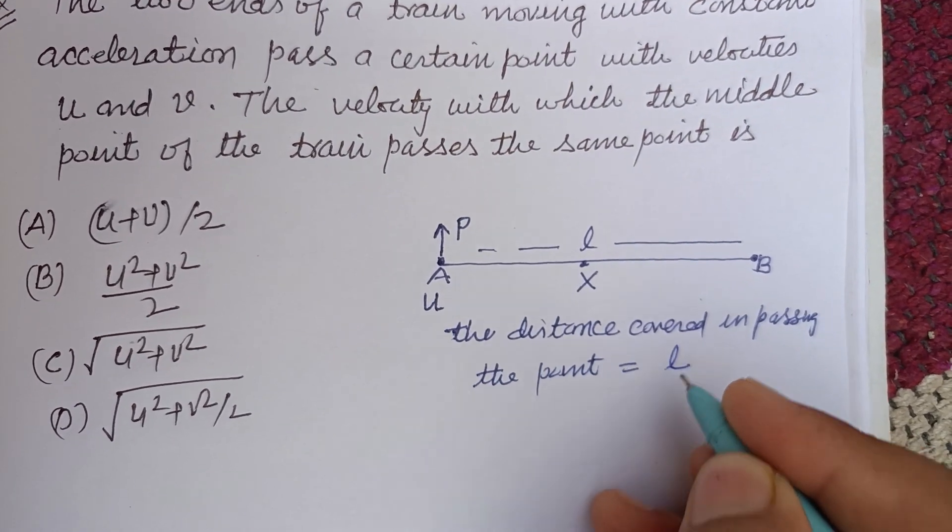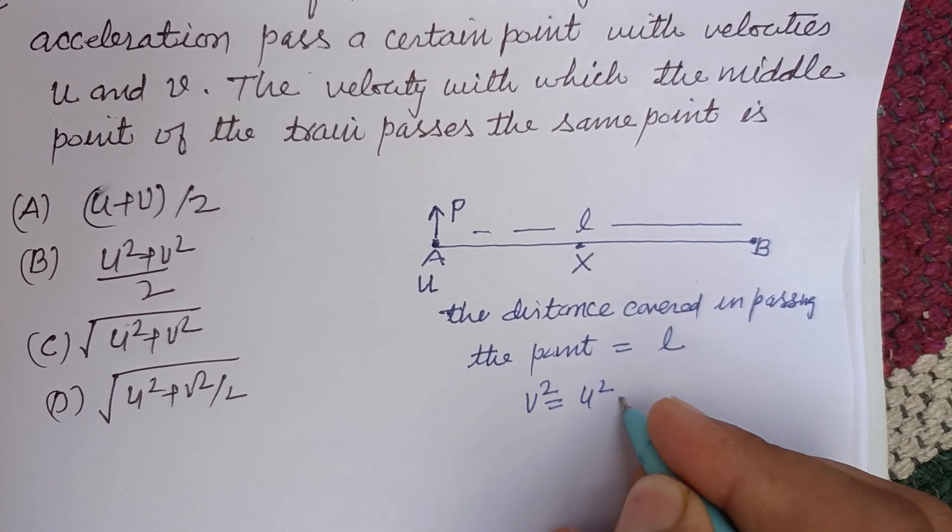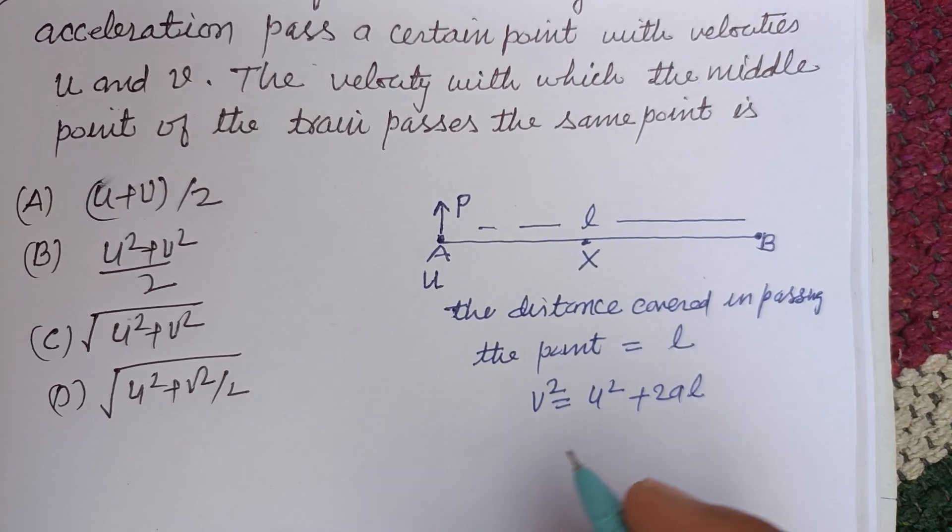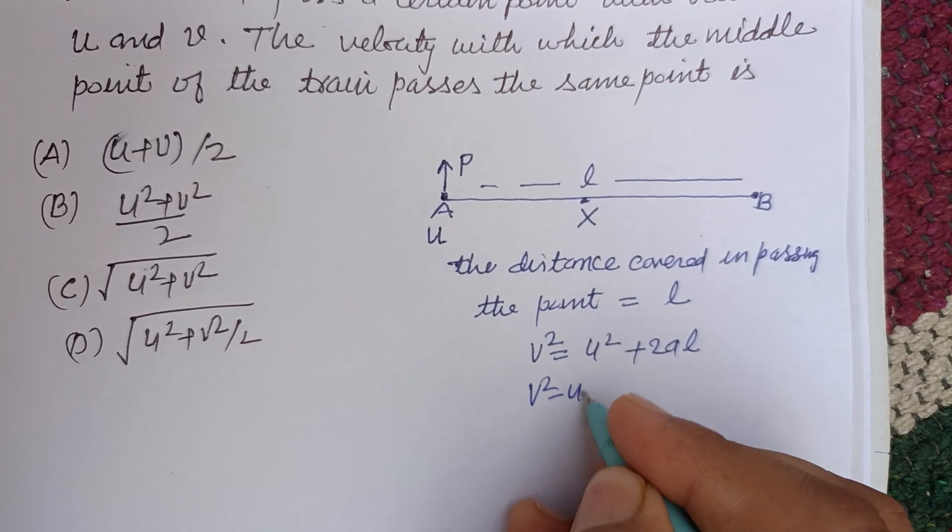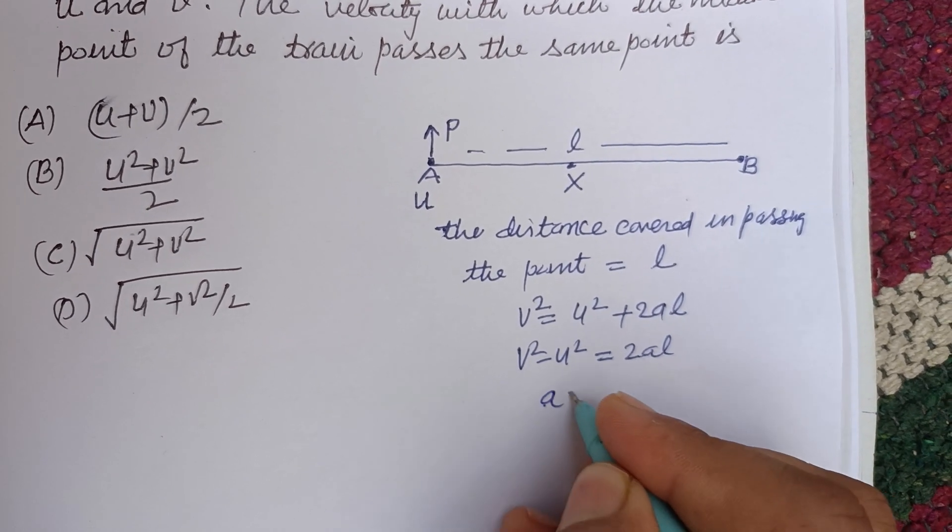So using v² = u² + 2aL, where a is the acceleration which is constant for both points, we get v² - u² = 2aL, or a = (v² - u²) / 2L.